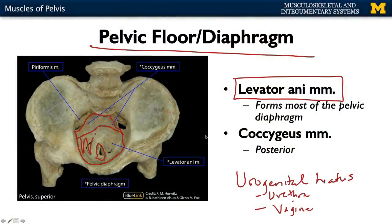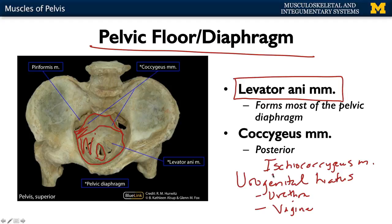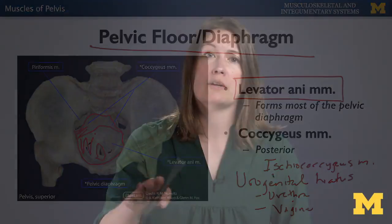Looking posteriorly, you have your coccygeus muscle — sometimes referred to as the ischiococcygeus muscle; it's the same thing. The name ischiococcygeus is a bit more descriptive in terms of its attachment: from the ischium to the coccyx. This muscle plays a role in terms of the posterior portion of the pelvic floor, but it's not as clinically relevant.